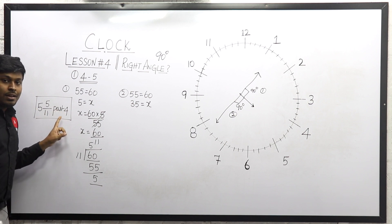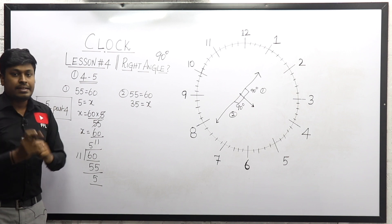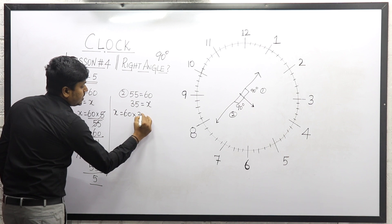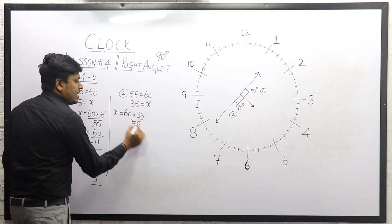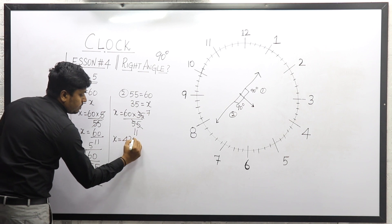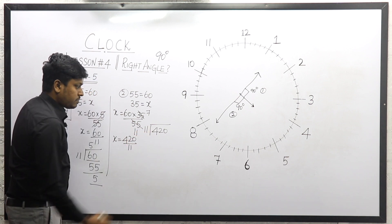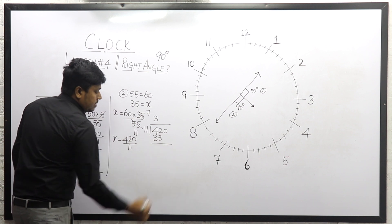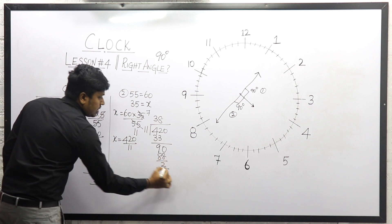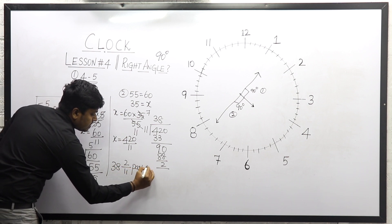First answer: 4 o'clock 5 5/11th minute, where both hands of the clock will be exactly at right angle. For the second possible: X equals 60 × 35 divided by 55. Cancel on 5 table: 11 times and 7 times, giving 420 divided by 11. Dividing: 3 times 33, remainder 9; 90, 8 times 88, remainder 2. So the answer is 38 2/11, past 4.